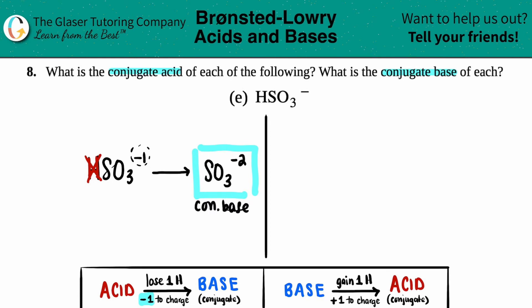This is your conjugate base. I'm just going to write con base for short. Now let's pretend that the HSO3 minus one was a base. Then we can find the conjugate acid.